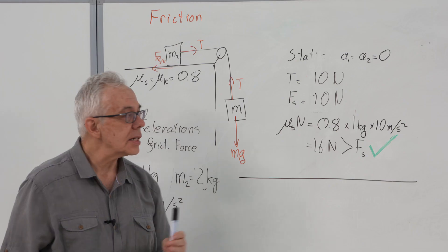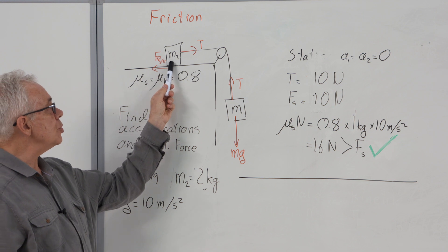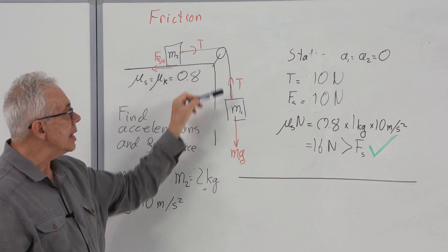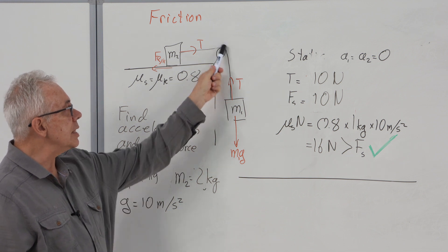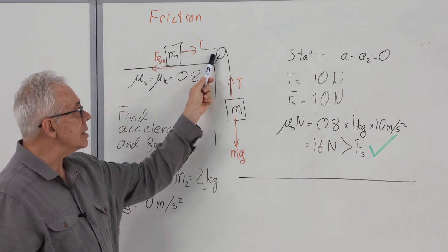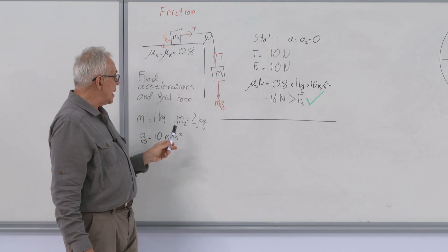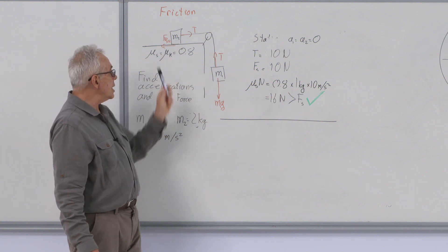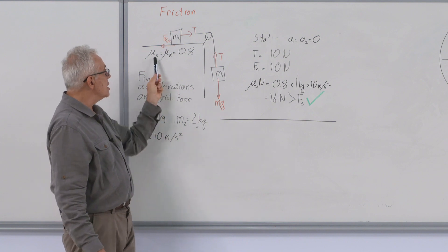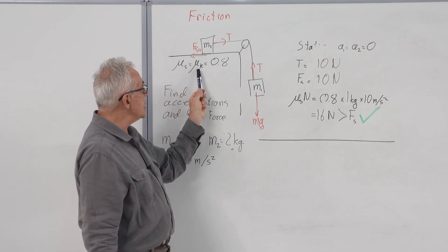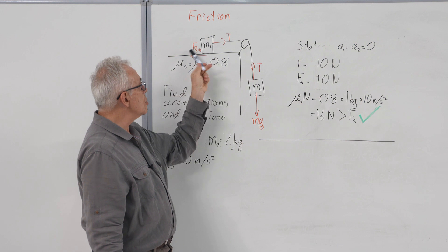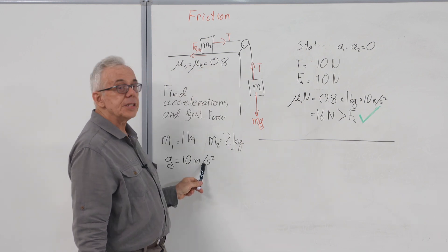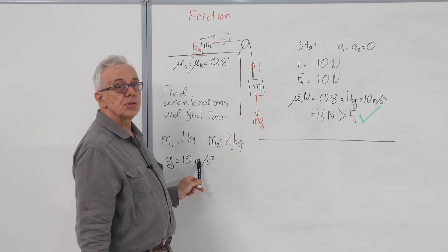Our first example involves a mass m2 sitting on a flat tabletop and a mass m1 hanging. The pulley is frictionless and massless. The hanging mass is 1 kilogram and the mass on the table is 2 kilograms. The frictional coefficients static and kinetic both 0.8. Gravitational acceleration is 10 meters per second squared.